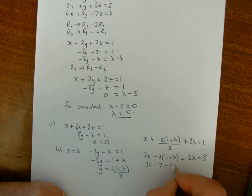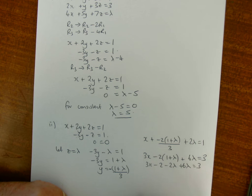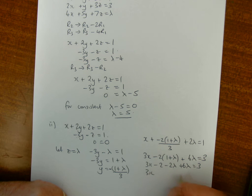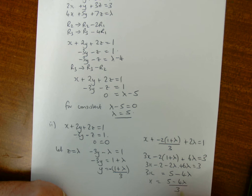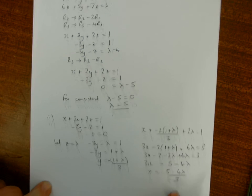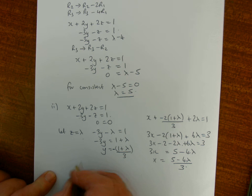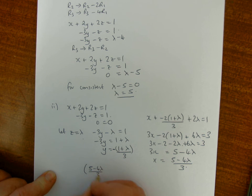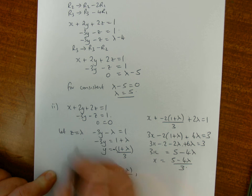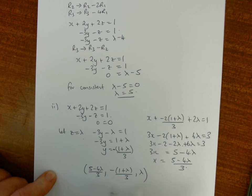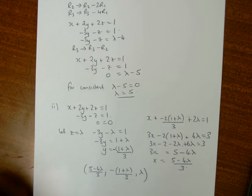So x is (5 minus 4 lambda) over 3. So there's my three parametric coordinates of the line. The solution is these three parametric coordinates, and that represents the parametric equation of a line in 3D.